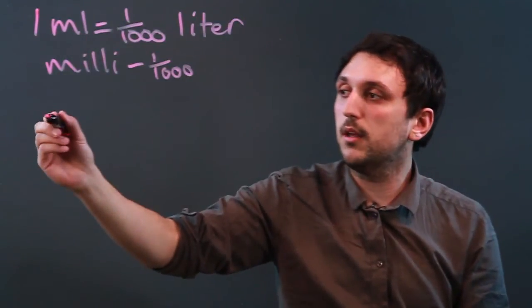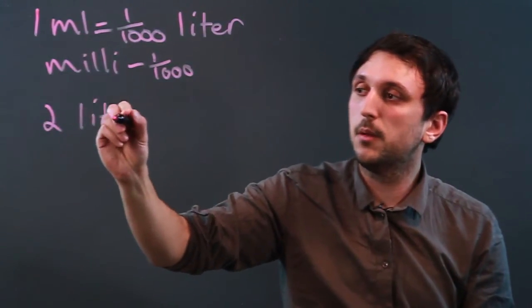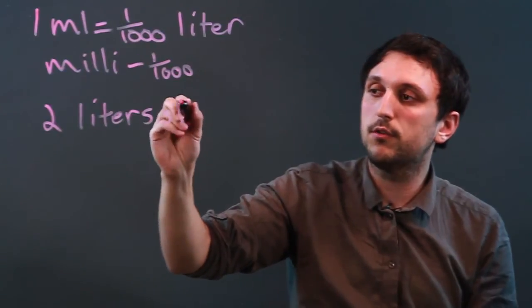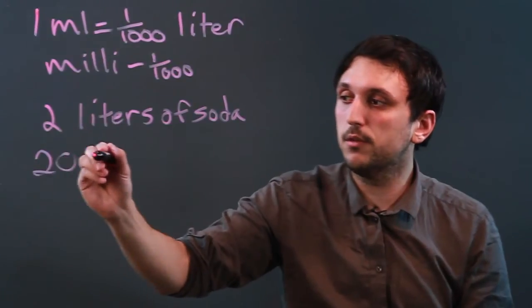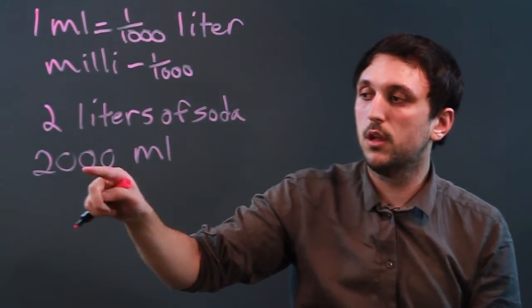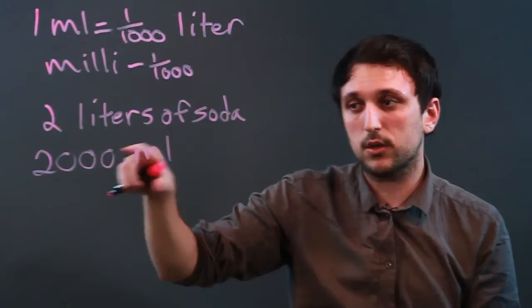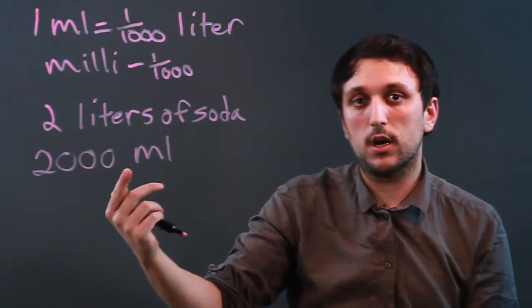Now another way to think about it is like a two liter bottle of soda. You see that in the grocery aisle, that's the large bottle. That would be like two thousand milliliters. So if you can think of that bottle and you divide it by two thousand, you're talking about one milliliter.